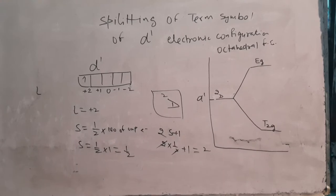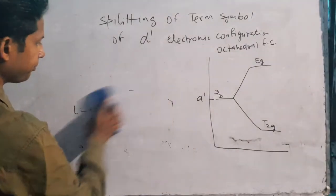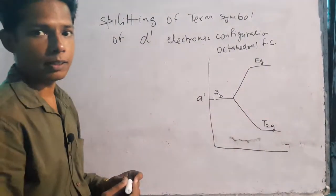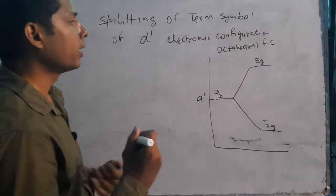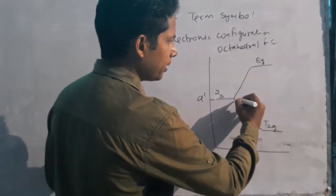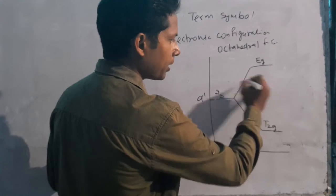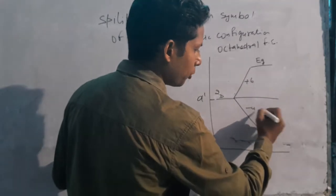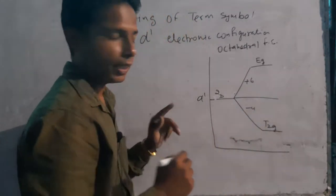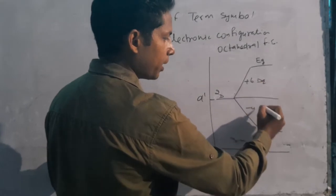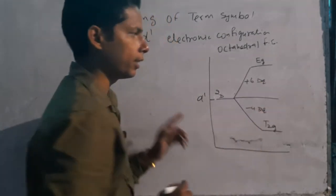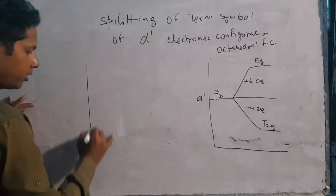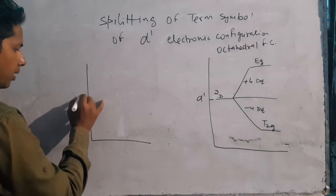Tetrahedral field strength में CFT से याद होगा कि eg की energy +6dq में बढ़ रही थी और t2g की energy -4dq में घट रही थी। Tetrahedral में इसका ठीक उल्टा होगा। यह फिर से D1 configuration का diagram है और यह 2D term symbol है।